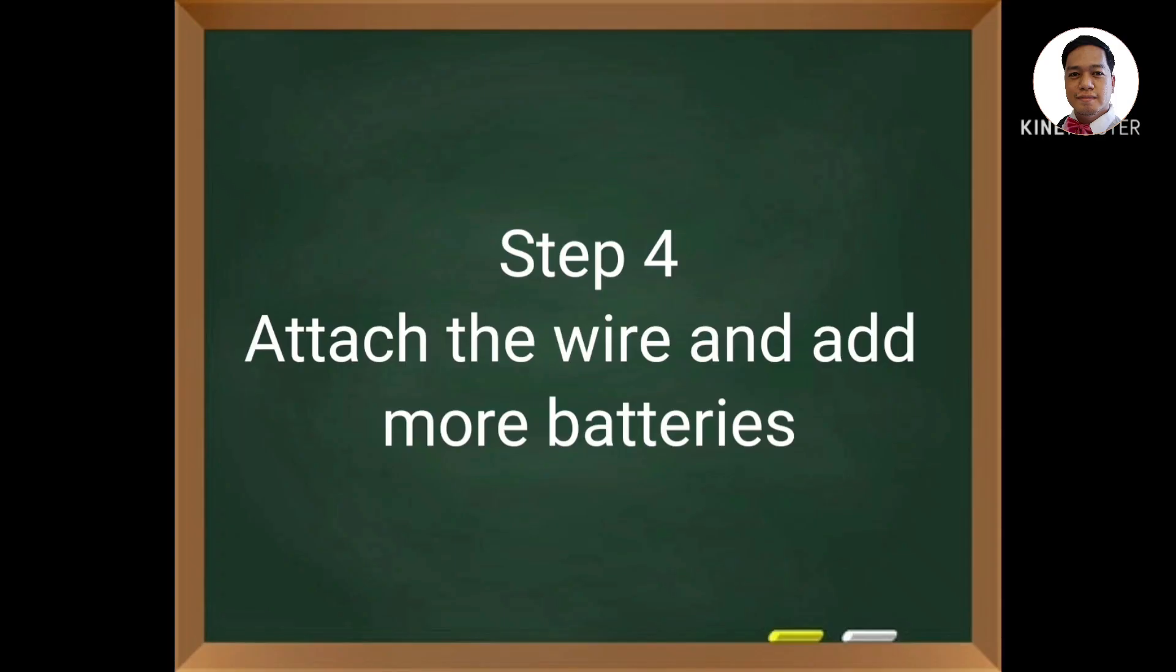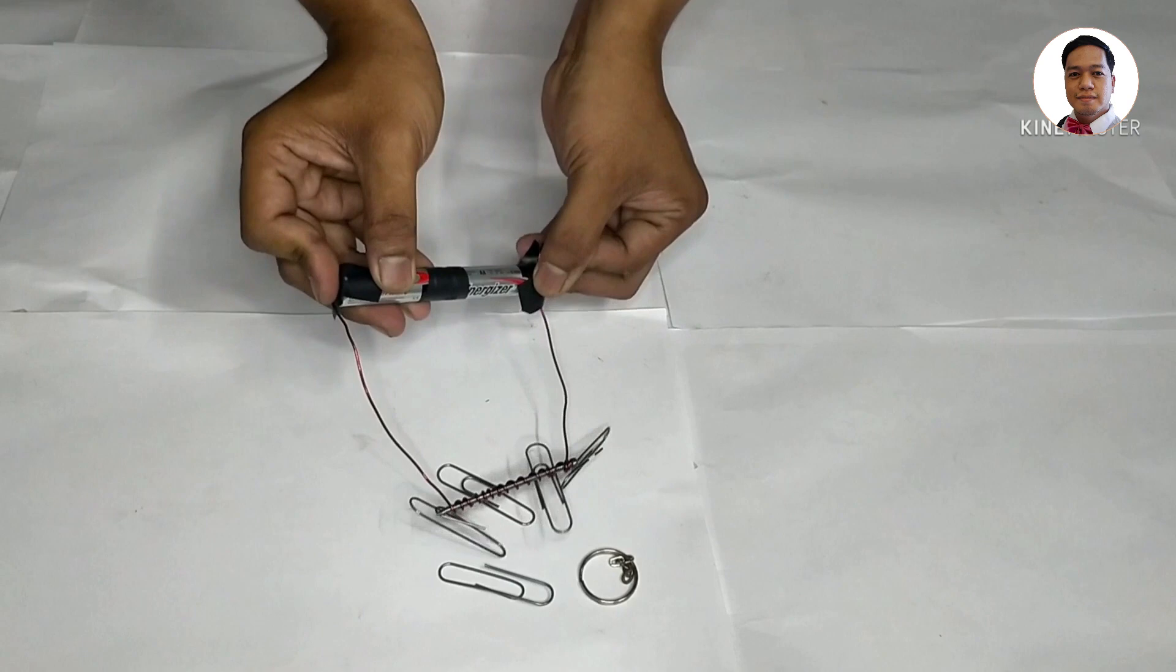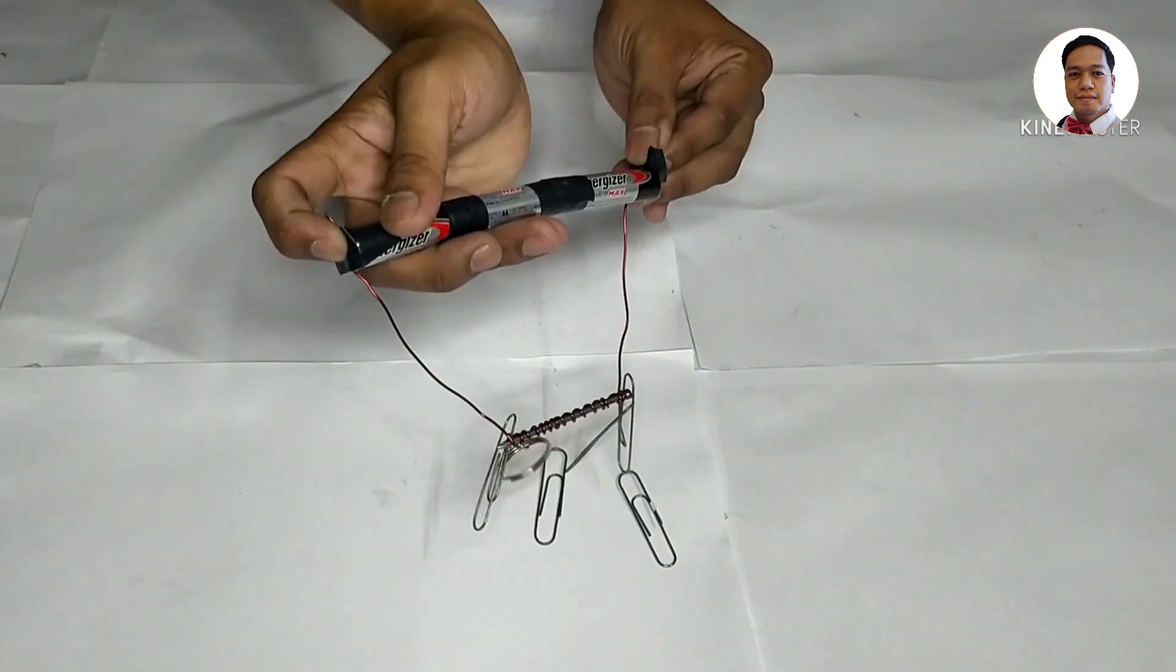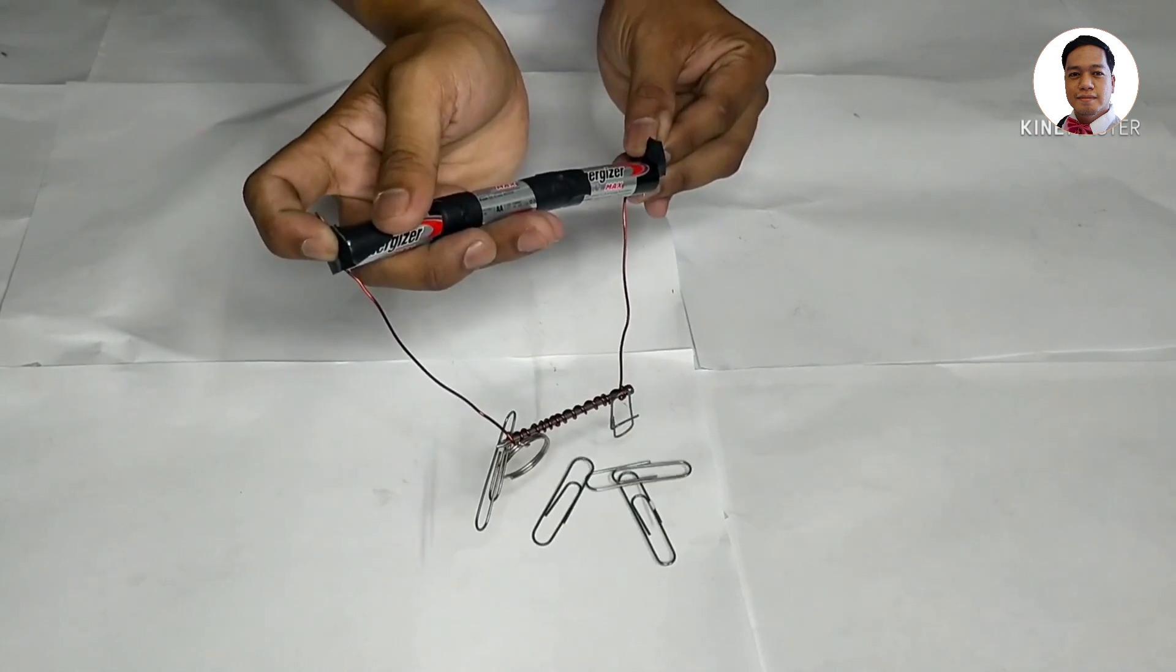Attach the wire and add more batteries. Collect the data with one dry cell, with two dry cells, and with three dry cells. Make three trials for each time. Count the number of metals attracted to each.